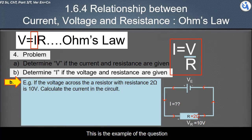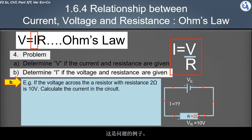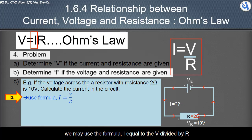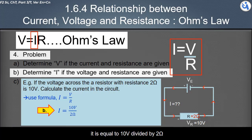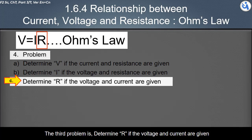Let's look at an example. If the voltage across the resistor with resistance of 2 ohm is 10 volt, calculate the current in the circuit. We may use the formula I equal to V divided by R. It is equal to 10 volt divided by 2 ohm. The current is 5 ampere.